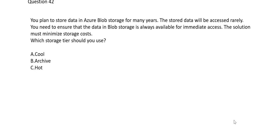Let's see this question. The question says you want to store blob storage data for many years, and the stored data will be accessed rarely. Usually if you have an archive requirement where old data has to be archived for seven years, you put it in archive tier. But the keyword changes things: even though it is accessed rarely, whenever it is accessed, it has to be immediate access.